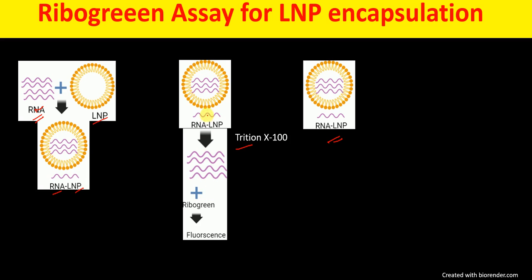In the Triton X-100-treated sample, all the RNA comes out of the lipid nanoparticle. When we treat this with RiboGreen, we get fluorescence, and this fluorescence will correspond to the total RNA concentration.